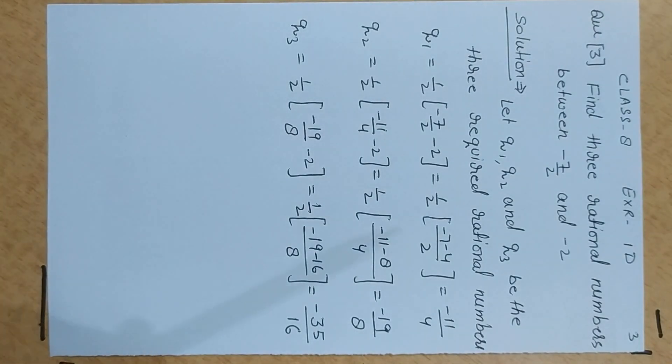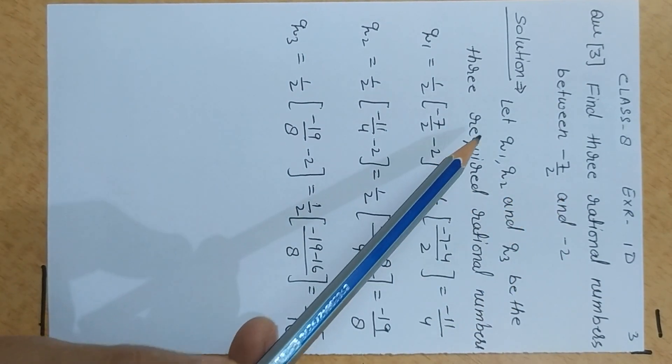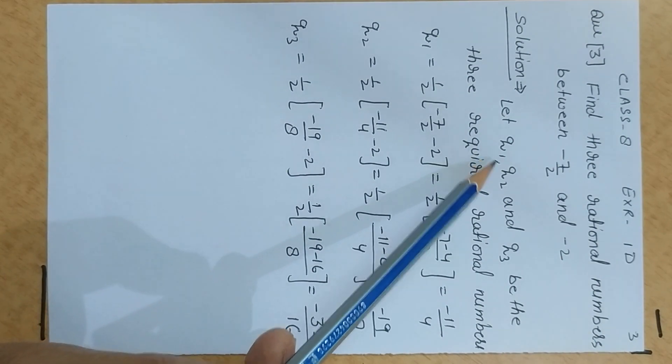Okay, in question number 3. Find 3 rational numbers between minus 7 by 2 and minus 2. Let us suppose that 3 rational numbers be q1, q2, q3.